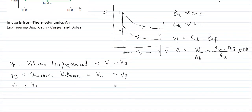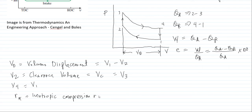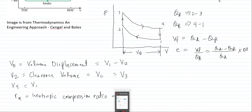One important ratio to also take note of is R_K — the isentropic compression ratio — which is equal to V1 over V2. Further formulas will be discussed in the next video with example problems. Thank you for watching.